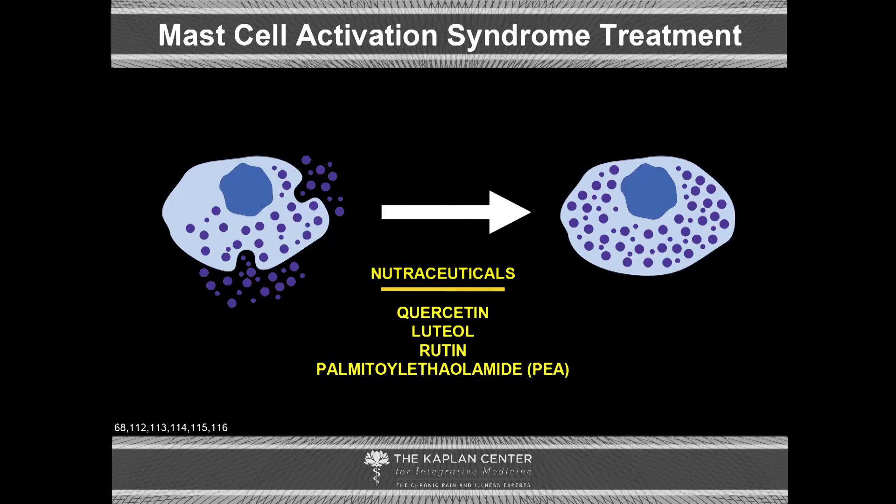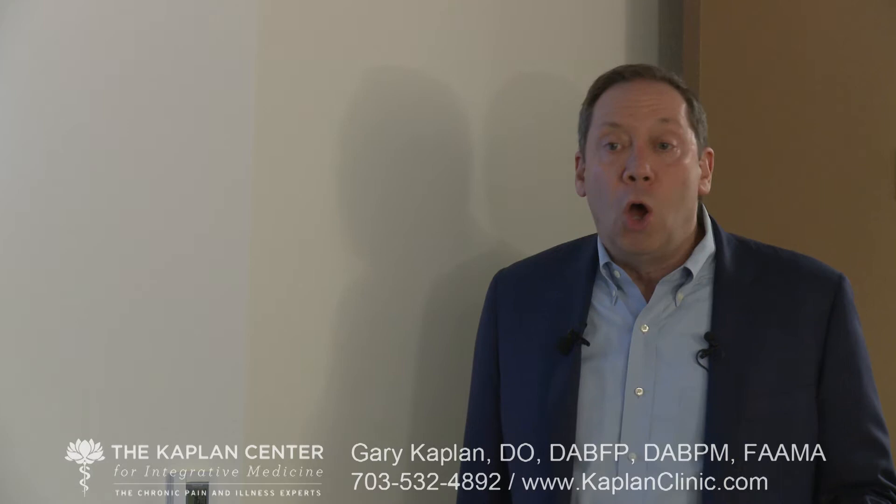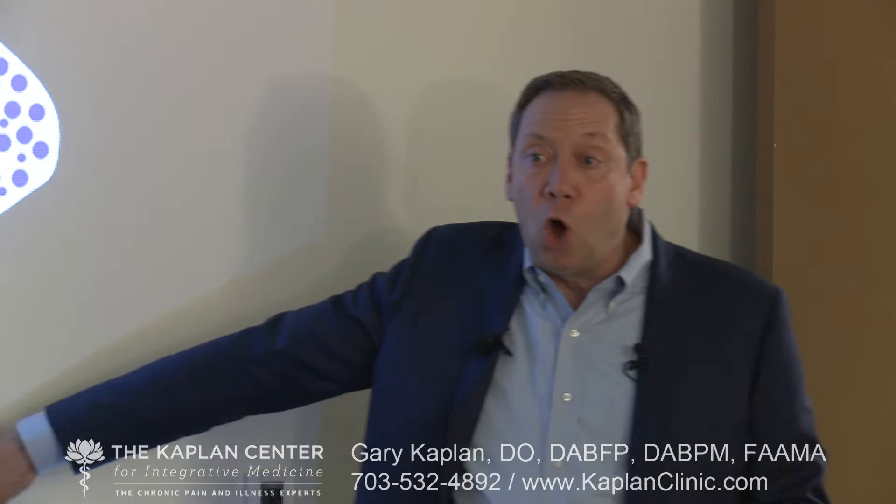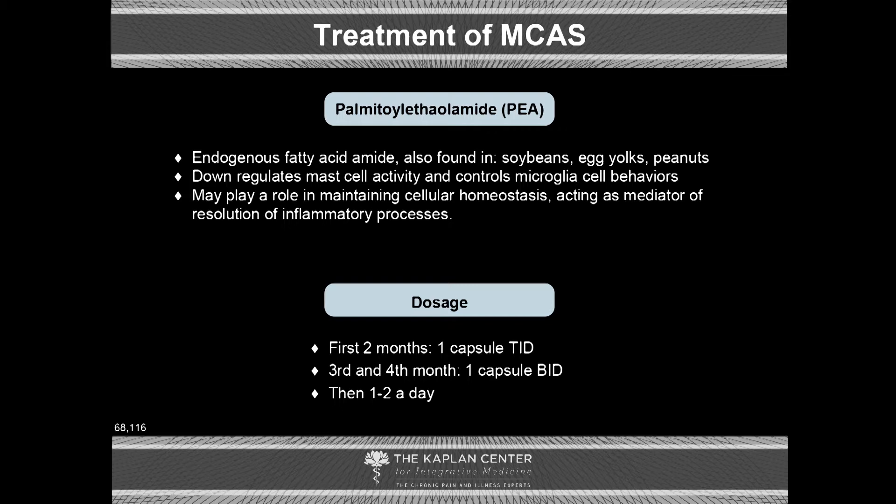It's about layering this treatment — you're not going to do it by treating just one thing. Nutraceuticals shown to be useful in stabilizing mast cells include quercetin, luteolin, rutin, and PEA — all very effective. PEA is particularly effective in maintaining the homeostasis between the functioning of the mast cells and the microglia.